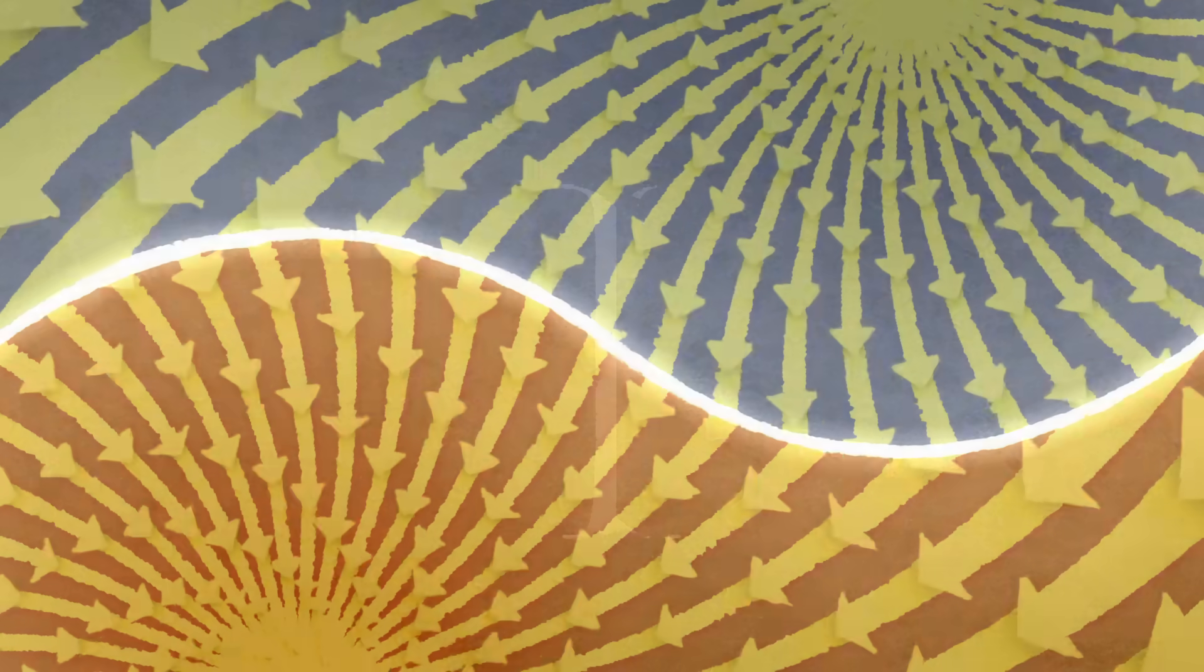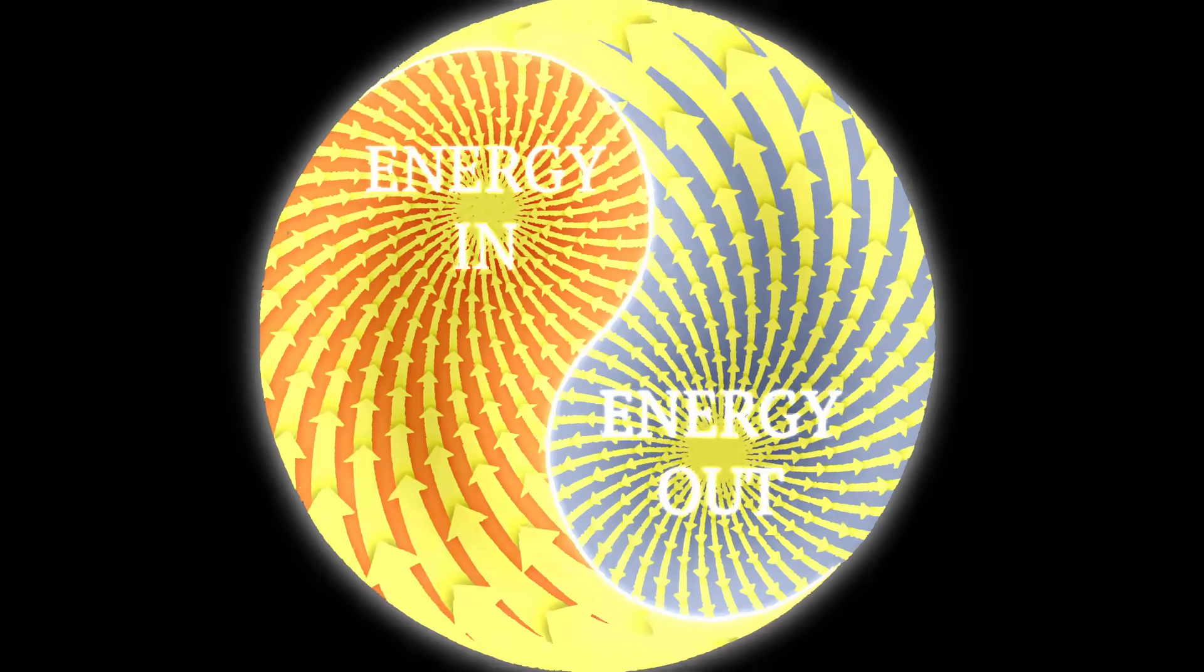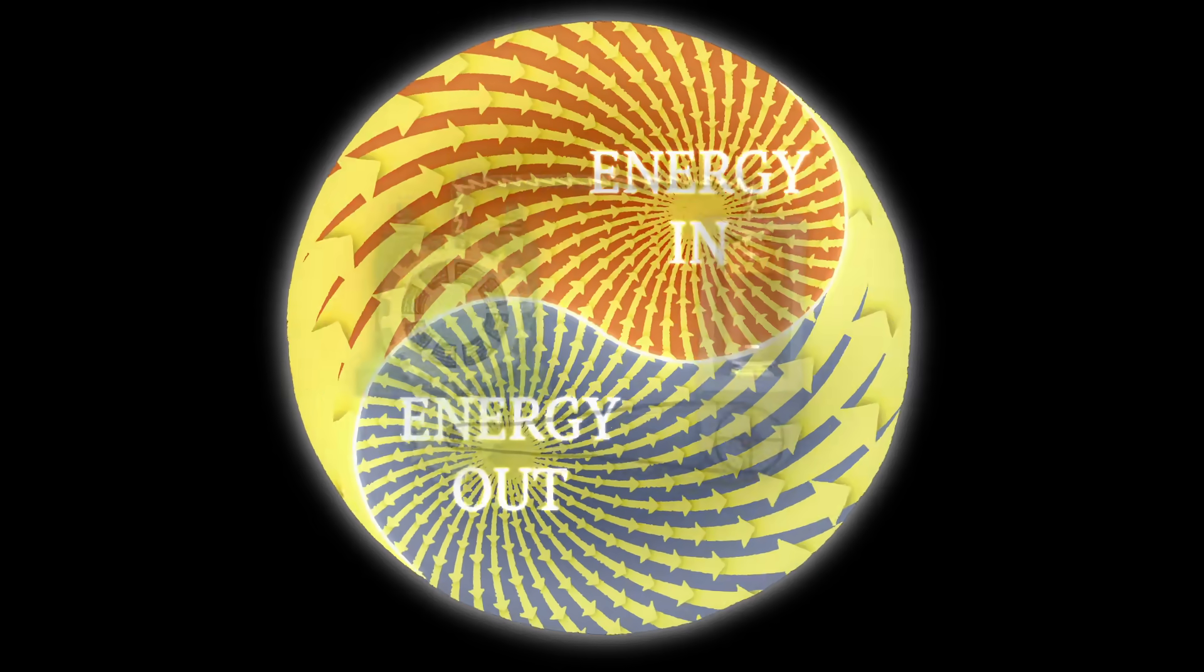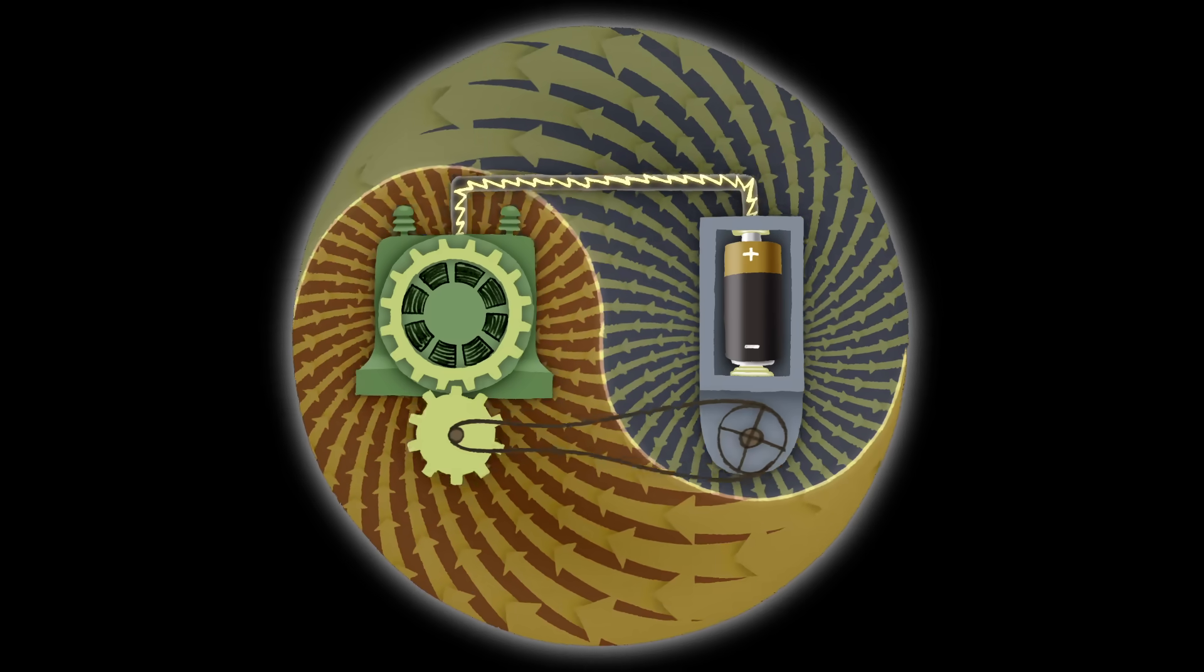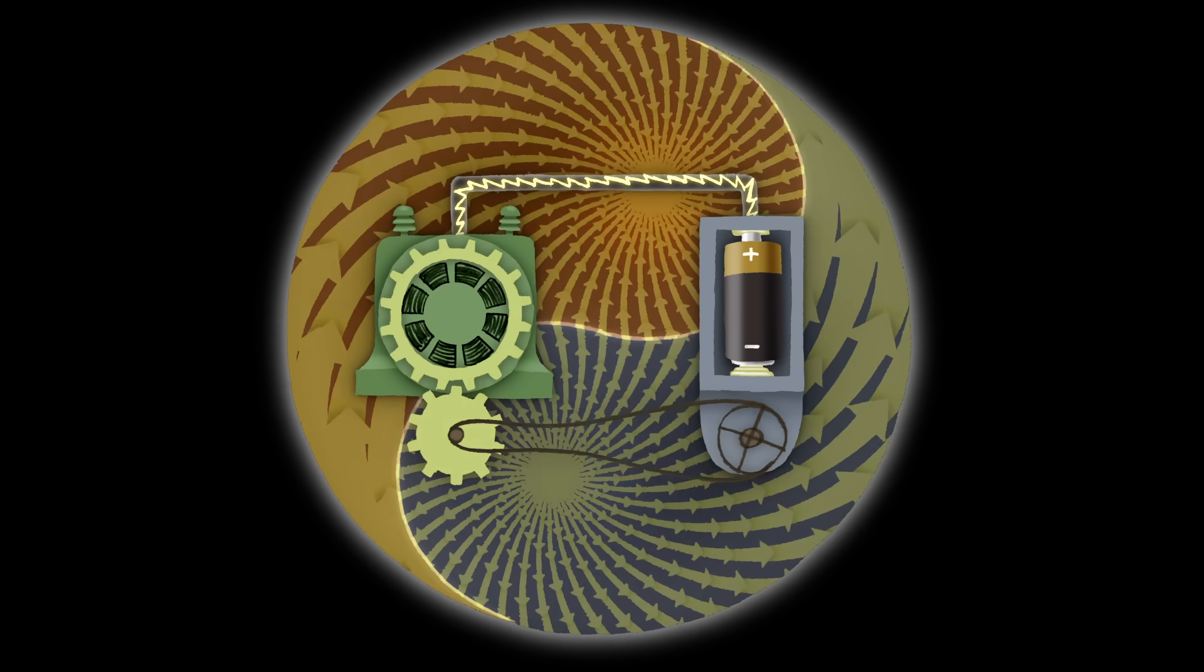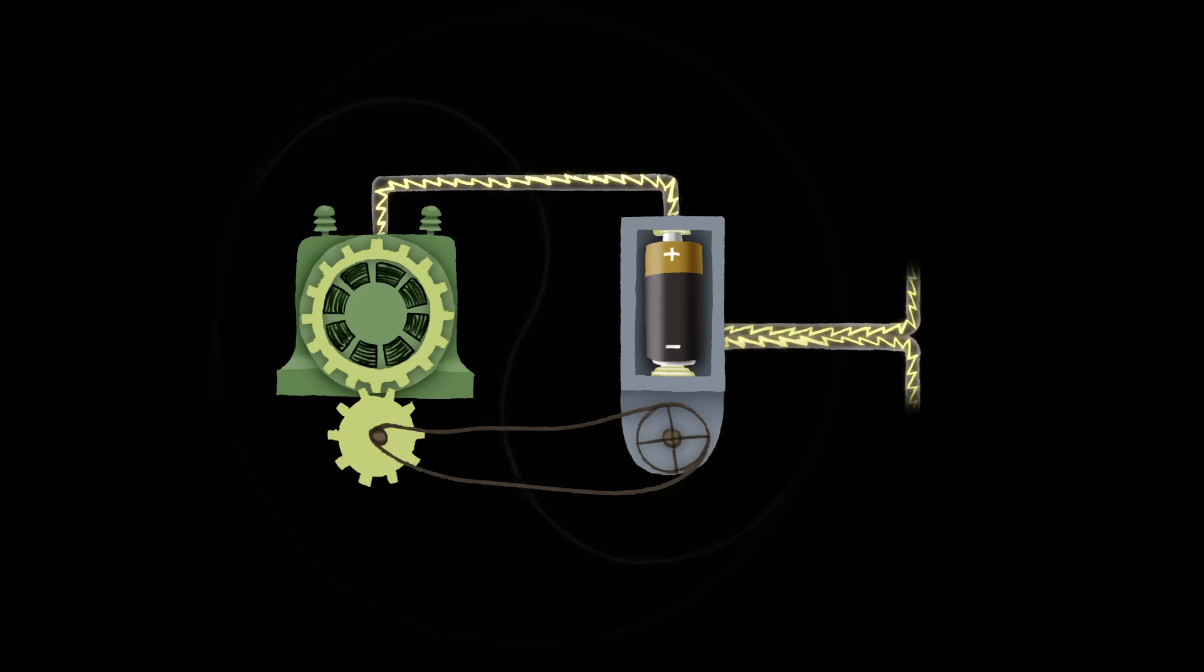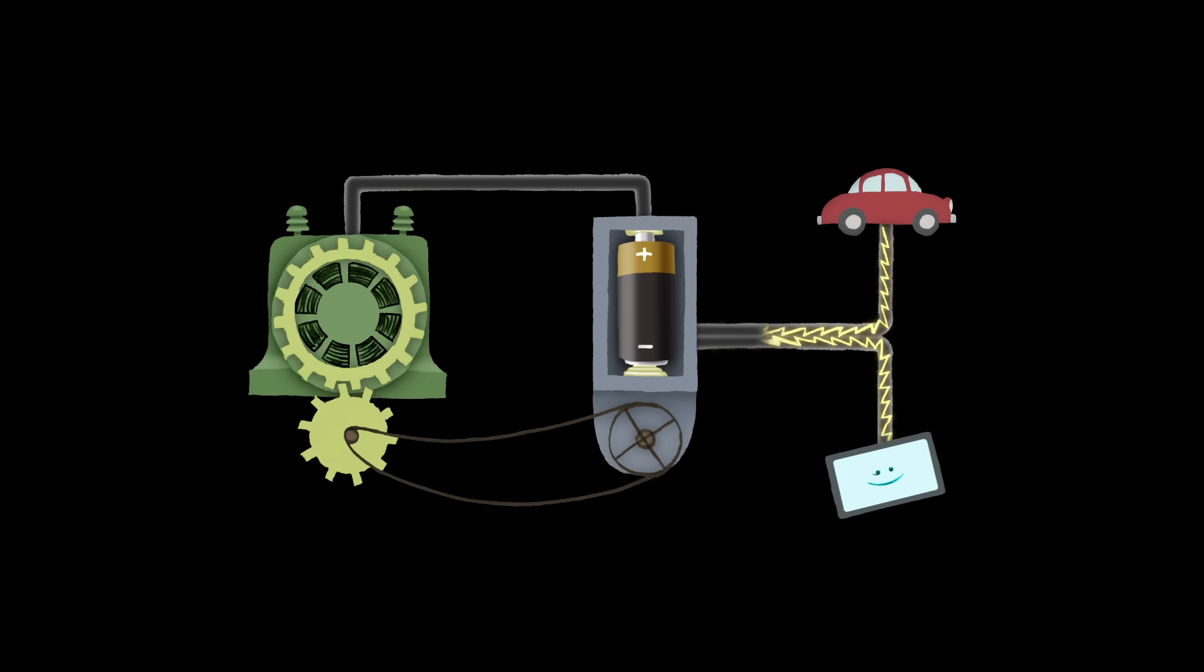The first law of thermodynamics says that energy can't be created or destroyed. You can't get out more energy than you put in. That rules out a useful perpetual motion machine right away, because a machine could only ever produce as much energy as it consumed. There wouldn't be any left over to power a car or charge a phone.